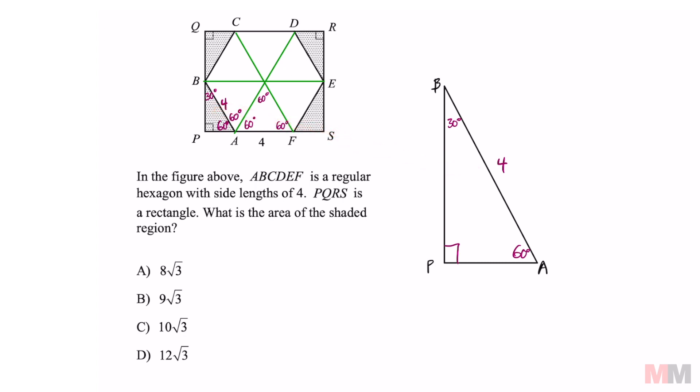In a 30-60-90 triangle, the relationship is the one across 30 degrees is going to be represented with X. The one across 60 degrees is going to be X root 3, and the one across your hypotenuse is going to be twice as X. So we can set this equal to 2X.